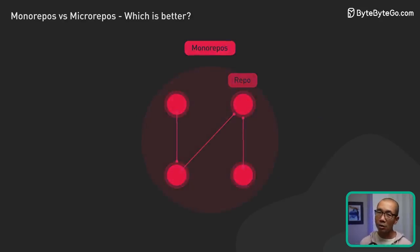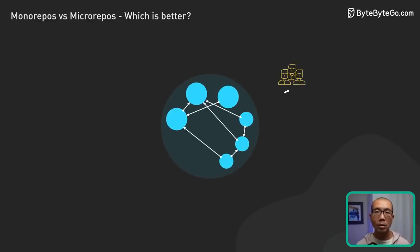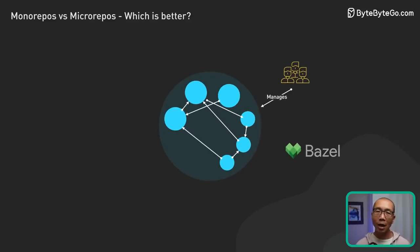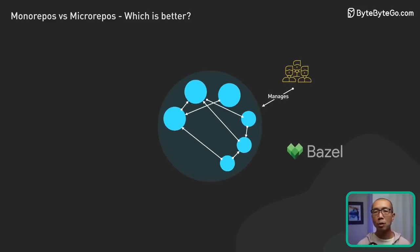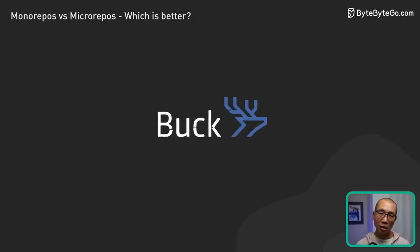However, it's not without challenges. Monorepos require careful planning and the right tools. Google even had to build a dedicated tool called Blaze and staff a large team to support their massive code base. Facebook uses Buck for similar reasons.